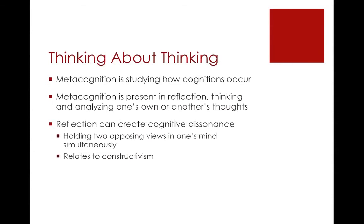This is where metacognition comes in. Metacognition is studying how cognitions occur and is present in reflection, thinking, and analyzing one's own or others' thoughts. Reflection allows for a tremendous amount of growth if you're able to analyze your own thoughts and actions. It can create cognitive dissonance, however, which occurs when you're holding two opposing views in one's mind simultaneously. This is how we can grow — relating to constructivism, which will be discussed next. If you hold two opposing thoughts in your mind, you'll need to do some rethinking and reevaluating, and through that, you'll experience growth.